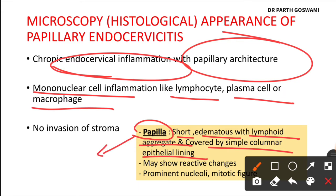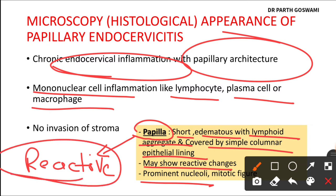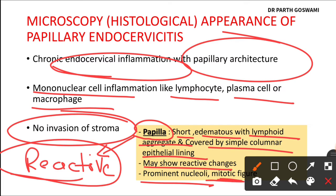Interestingly, these papillae may show reactive changes — meaning a high nucleus-to-cytoplasm ratio, enlarged cells, or prominent nuclei — which can mimic malignancy. You have to be cautious: reactive changes can be present in endocervicitis, but stromal invasion is absent because it is not a malignancy. Mitotic figures can also be observed.